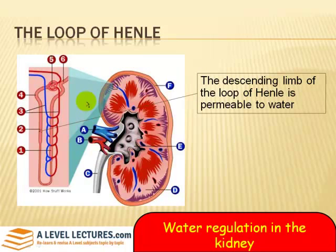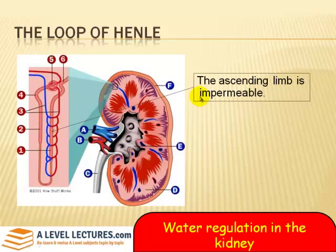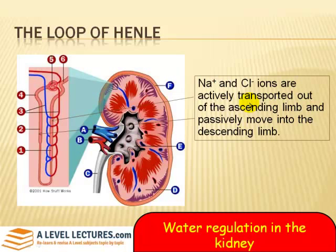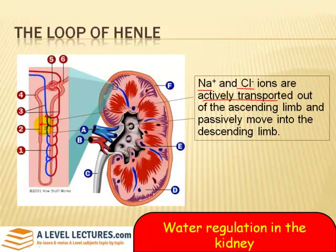Let's think about what's going on. The descending limb of the loop of Henle is permeable to water — it allows water to pass out into the surrounding tissue. The ascending limb by contrast is impermeable and doesn't allow water to pass out. What does happen though is sodium ions and chloride ions are actively transported — requiring energy — out of the ascending limb, and passively move into the descending limb. So sodium and chloride ions are actively transported out of the ascending limb and passively move into the descending limb.